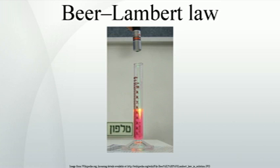Deviations from Beer–Lambert law. Under certain conditions Beer–Lambert law fails to maintain a linear relationship between absorbance and concentration of analyte. These deviations are classified into three categories: real fundamental deviations due to the limitations of the law itself; chemical deviations observed due to specific chemical species of the sample being analyzed; and instrument deviations which occur due to how the absorbance measurements are made.